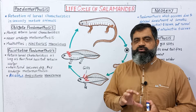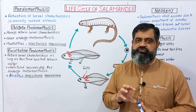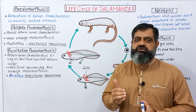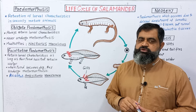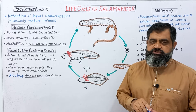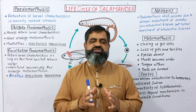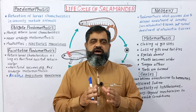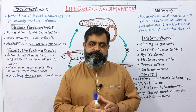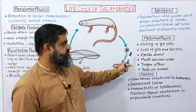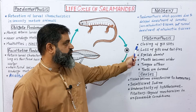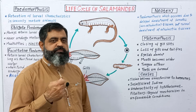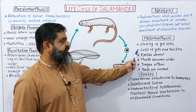Pedomorphosis is a condition in which the larval form does not change into adult form. Usually during metamorphosis, certain changes take place in the larval form under the influence of hormones from the thyroid gland. The changes which take place during metamorphosis include: number one, closing of gill slits, which are the openings for gills used in respiration.